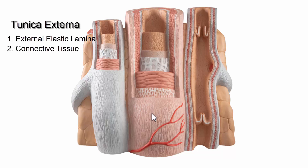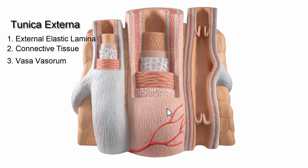We also have what's called a vasa vasorum — a vessel that brings blood to the artery itself. If the artery is thick enough and large enough, it's going to need its own blood supply, and that's provided by the vasa vasorum so that all of this tissue gets fed.